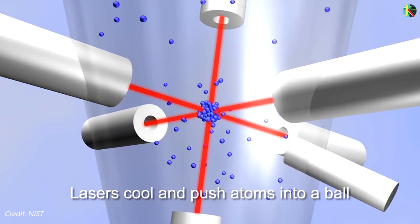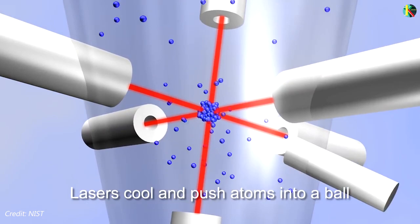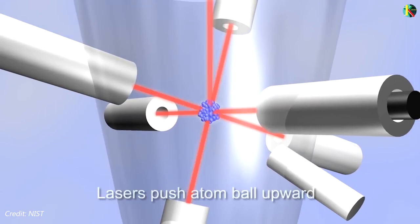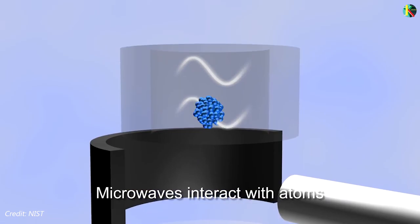Two vertical lasers are used to gently toss the ball upward and then all of the lasers are turned off. This little push is just enough to loft the ball about a meter high through a microwave filled cavity. Under the influence of gravity, the ball then falls back down through the cavity.